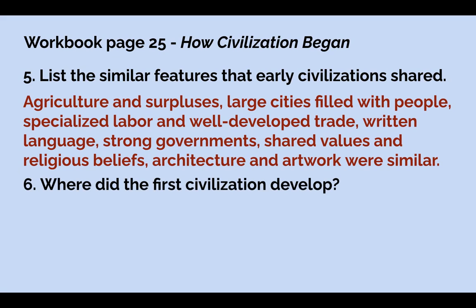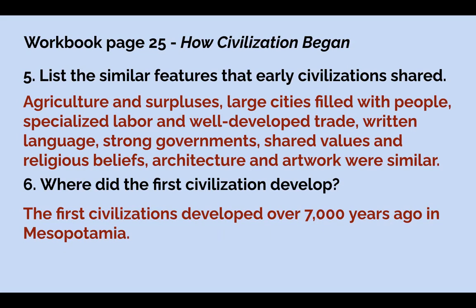Number six asks a specific location: where did the first civilization develop? The first civilizations developed over 7,000 years ago in Mesopotamia. That term literally means 'land between the rivers' — it's an area in what is today Iraq, and we'll talk about Mesopotamia as we continue.